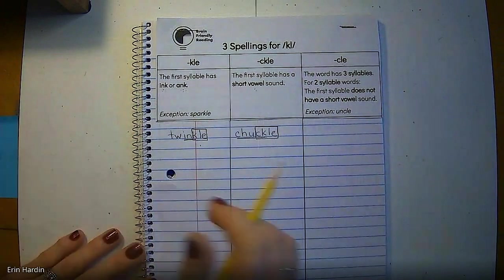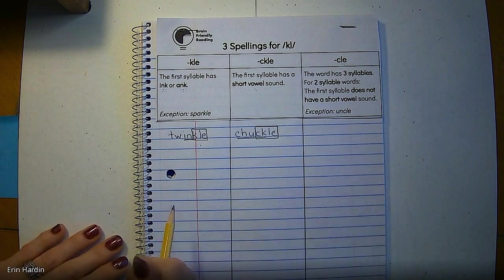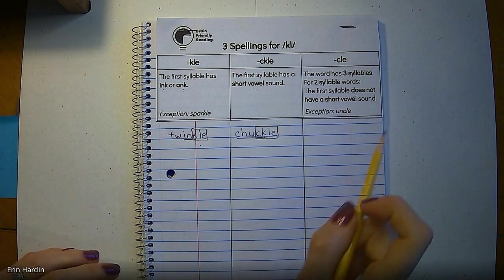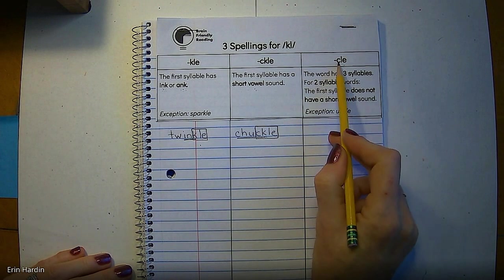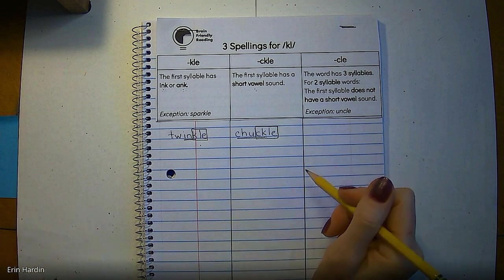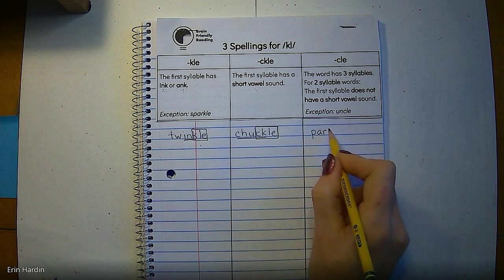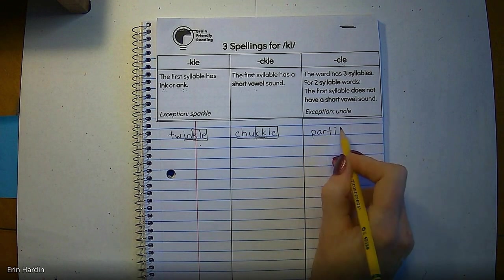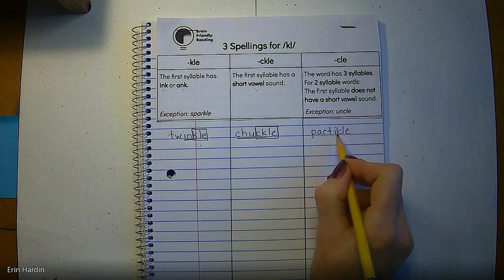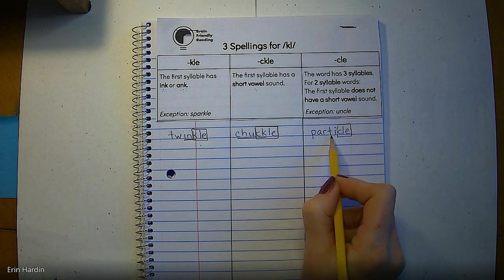Now let's add the third spelling. The word is particle. Let's arm spell that one. Let's break the syllables up first. PAR-TI-CLE. That's a three-syllable word. So when we have three-syllable words, we use this spelling. Let's put each syllable on our arm. PAR-P-AR-TI-T-I-CLE. C-L-E says CUL. Let's box that C-L-E and check our spelling. PAR-TI-CLE.